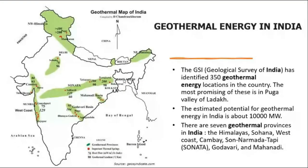In Indian conditions, the Geological Survey of India has identified 350 geothermal energy locations in India. Puga Valley in Ladakh was one of the first locations where geothermal energy was identified. The geothermal potential of India is about 10,000 megawatts. Key regions include the Himalayas, the Sohana region, the West Coast, the Cambay basin, the Andaman and Nicobar Islands, and the Godavari and Mahanadi areas. Development is still ongoing but the potential is significant.